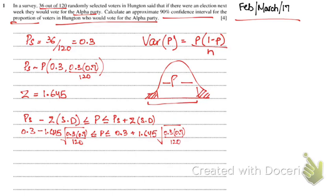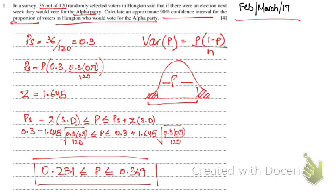Solving this gives the answer: 0.231 < P < 0.369. To summarize: PS is 0.3 (36 over 120), PS follows a proportion with mean 0.3 and variance 0.3 × 0.7 upon 120. You find the Z value corresponding to area 0.95 because the confidence interval is 90%, leaving 5% in each tail. That Z value is 1.645 — plug it into the formula and you get your proportion interval.